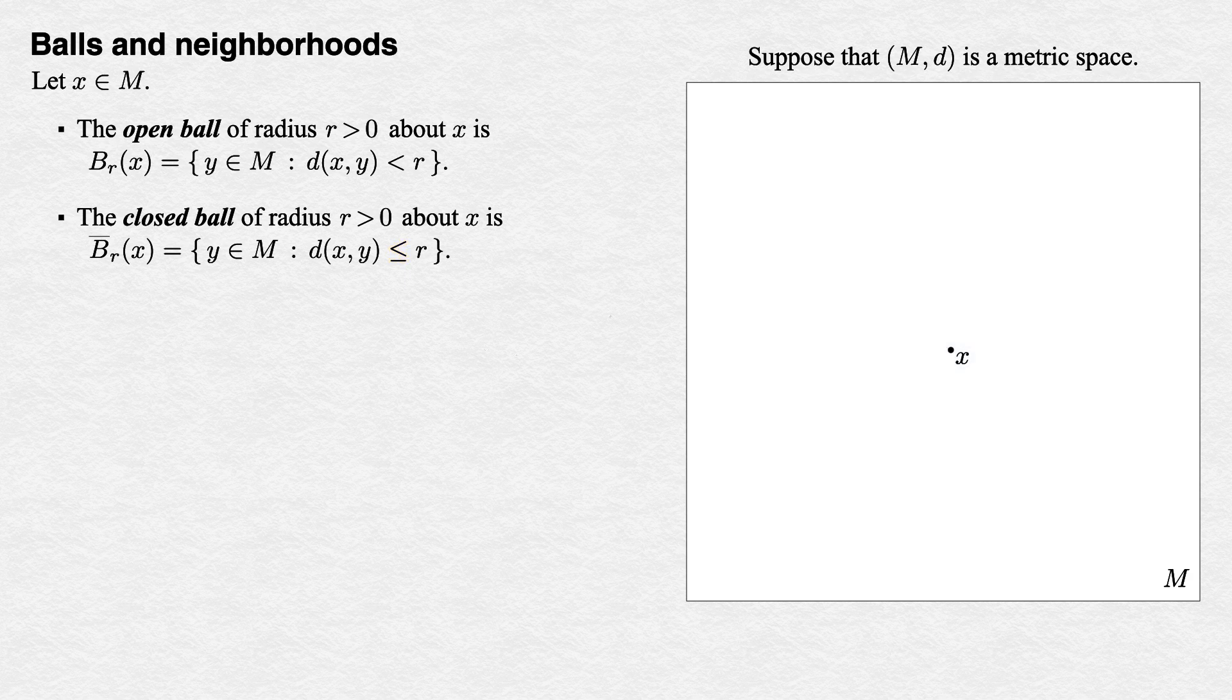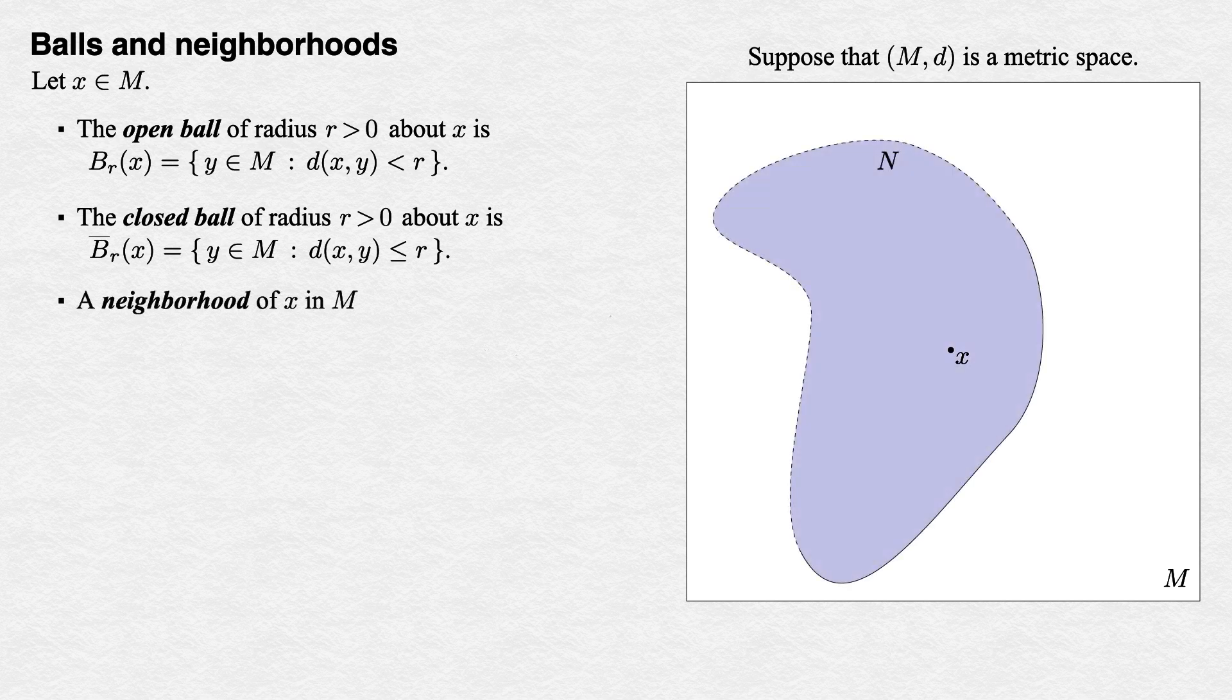Open and closed balls about x are examples of our third concept. A neighborhood of x is any subset of M that contains an open ball about x of some positive radius. An open ball of positive radius about x is the simplest type of neighborhood of x. It is an open ball. A closed ball of positive radius about x is also a neighborhood of x, because it contains an open ball about x. It also contains some other points, and this leads us to the full idea of a neighborhood.